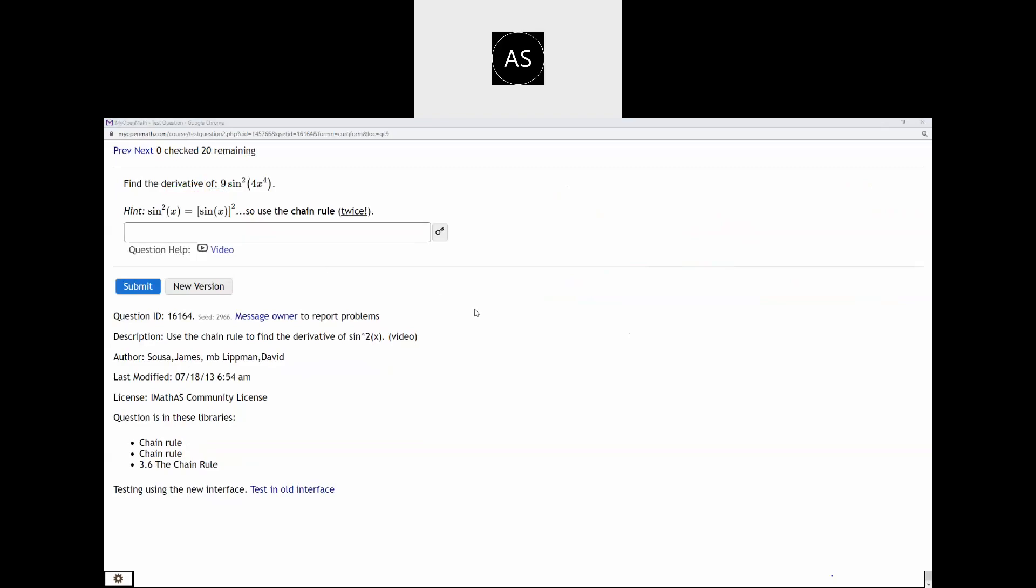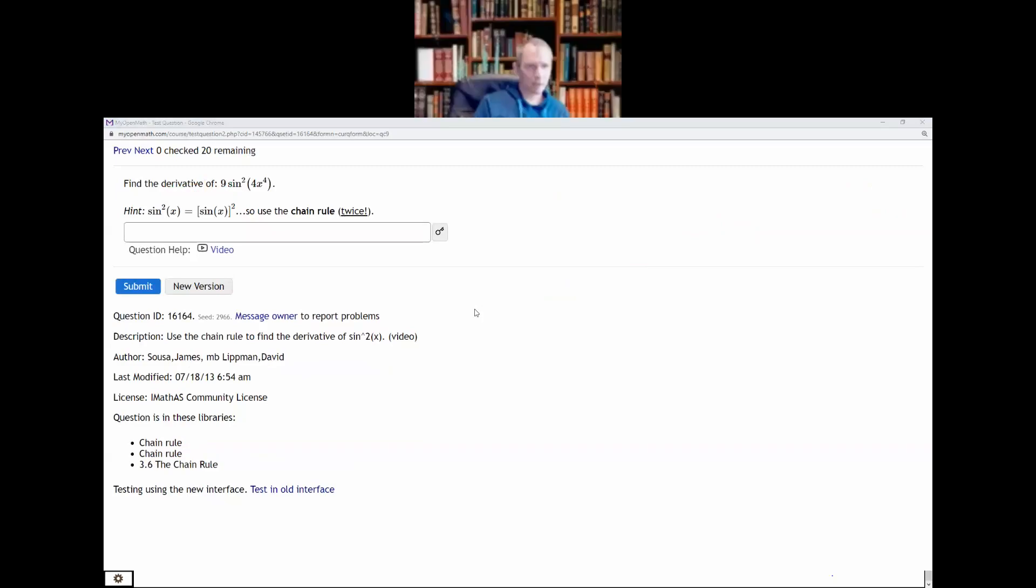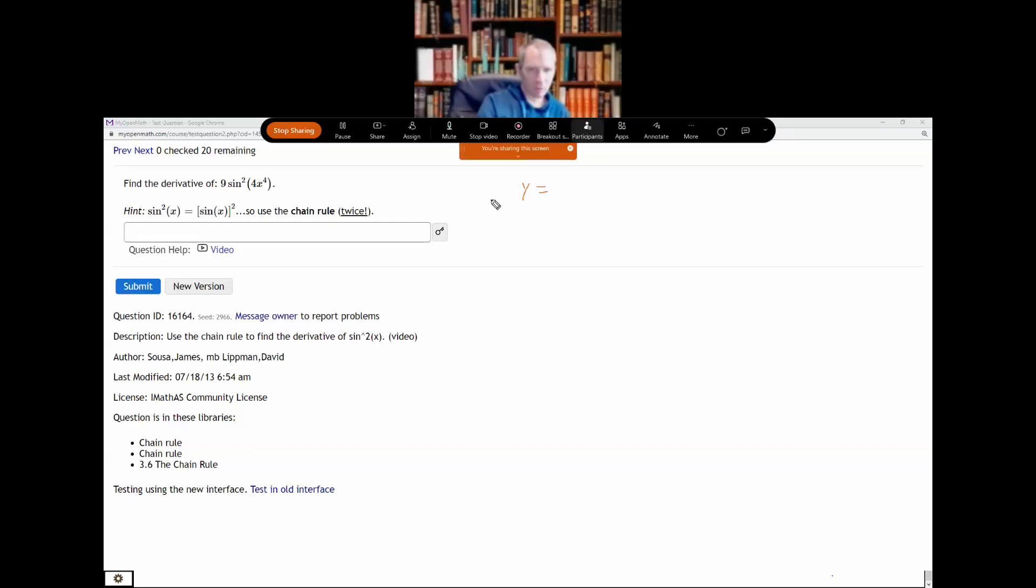Okay so here's 3.6 number 9. Find the derivative of 9 sine squared of 4x to the fourth. Okay so they give you a hint here that you're going to have to use the chain rule twice but if I write this out, if I write y equals...